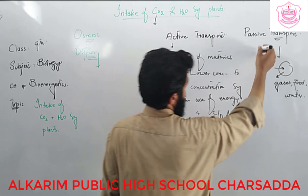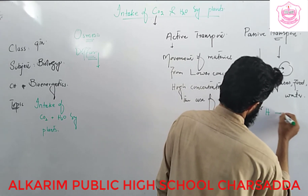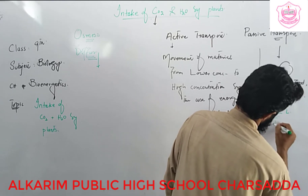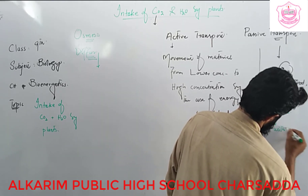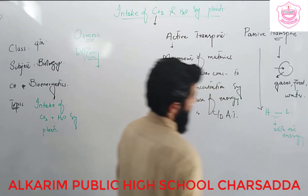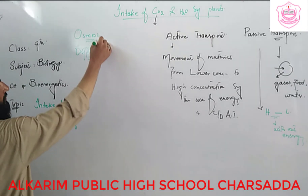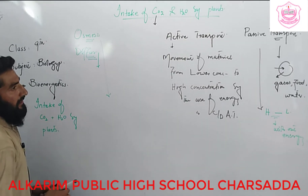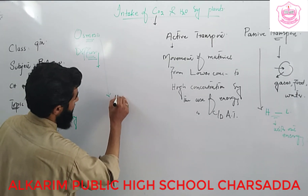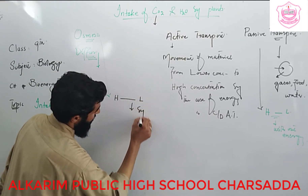Passive transport is the movement of material from a higher concentration to a lower concentration without the use of energy. The actual mechanism of water transport in plants takes place by osmosis. Osmosis is the movement of material from a high concentration area to a lower concentration area through a semi-permeable membrane.